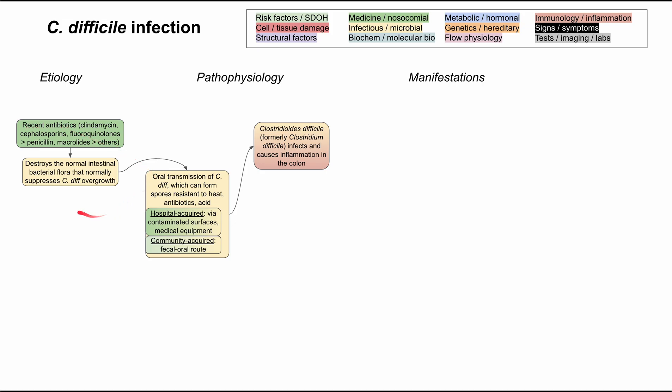Antibiotics aren't the only risk factor for C. diff transmission and infection — there are many other things. In lower SES areas and poorer countries, unsanitary drinking water can predispose you to community-acquired C. diff. Any action, whether iatrogenic, nosocomial, or otherwise, that suppresses or inhibits your gastric acid can also predispose you to C. diff, since the oral transmission of spores will more likely get through your gastric acid into your intestines and colon.